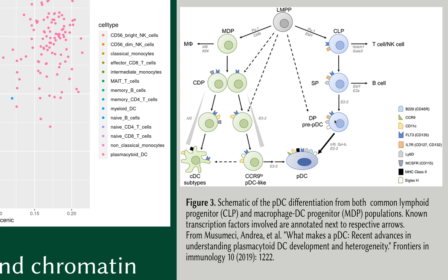With all three of the aforementioned transcription factors playing important roles in the process, TCF4 — shown here as E2-2 — is reported as one of the more specific and crucial transcription factors in the differentiation of plasmacytoid dendritic cells.